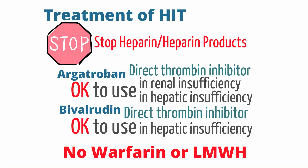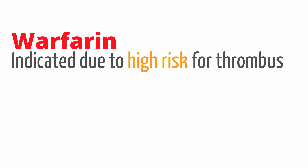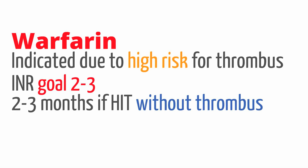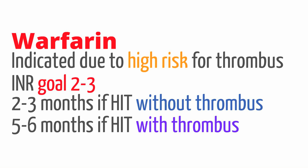Argatroban can be used in renal insufficiency and hepatic insufficiency, while bivalirudin generally can be used in hepatic insufficiency. Do not start warfarin or low molecular weight heparin for anticoagulation. Once a patient has a confirmed HIT study, you can bridge them with a direct thrombin inhibitor to Coumadin. INR goal is 2–3, with duration of therapy being 2–3 months in patients with HIT and no thrombus, or 5–6 months in patients with HIT and thrombus.